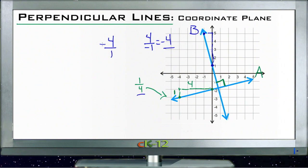So if you have a line and you're looking for the line that's perpendicular to it, just invert the slope and then change the sign and you'll get the slope of the perpendicular line. All right, let's take a look at the example problems.